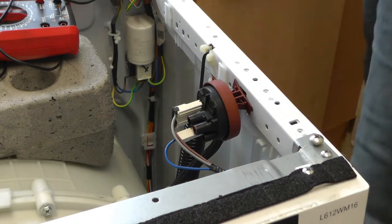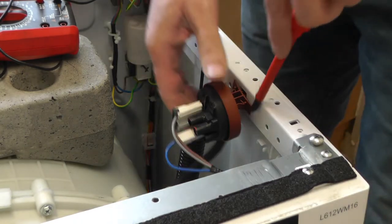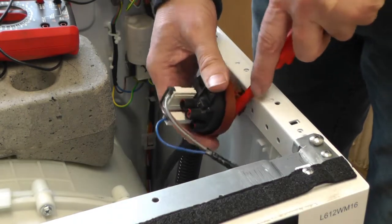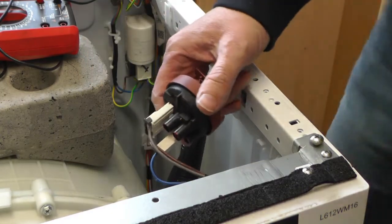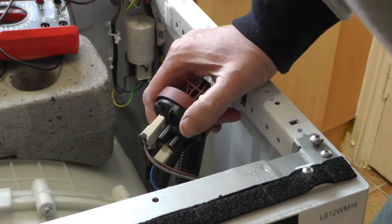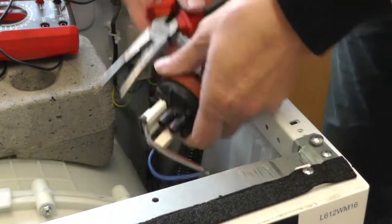So basically just pull this off, it just clips into place. There's a hose on the bottom connected to the tub.